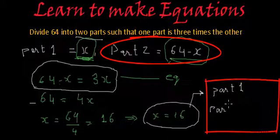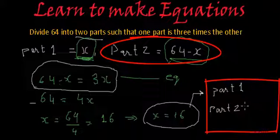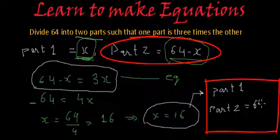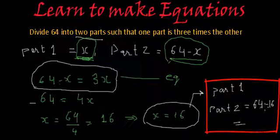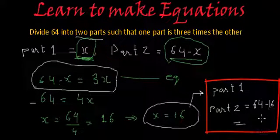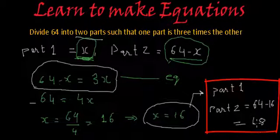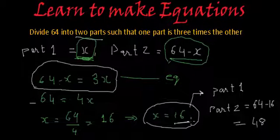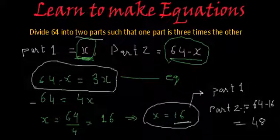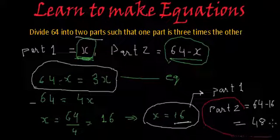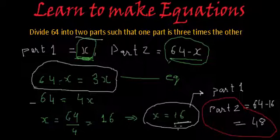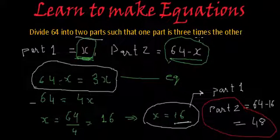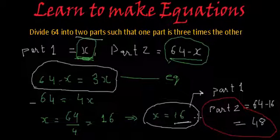And what is Part 2? Part 2 is 64 minus 16, and this will be 48. So Part 1 is 16 and Part 2 is 48. So 64 when divided into two parts of 16 and 48, we get this relation. 48 here is three times 16.